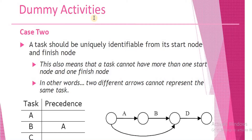Now let's take a look at Case 2 regarding the use of dummy activities in the Activity-on-Arrow diagram. We are going to interpret the same fact that we looked at in Case 1 with a different meaning in Case 2. The meaning of this fact — a task should be uniquely identifiable from its start node and finish node — had a specific meaning in Case 1.